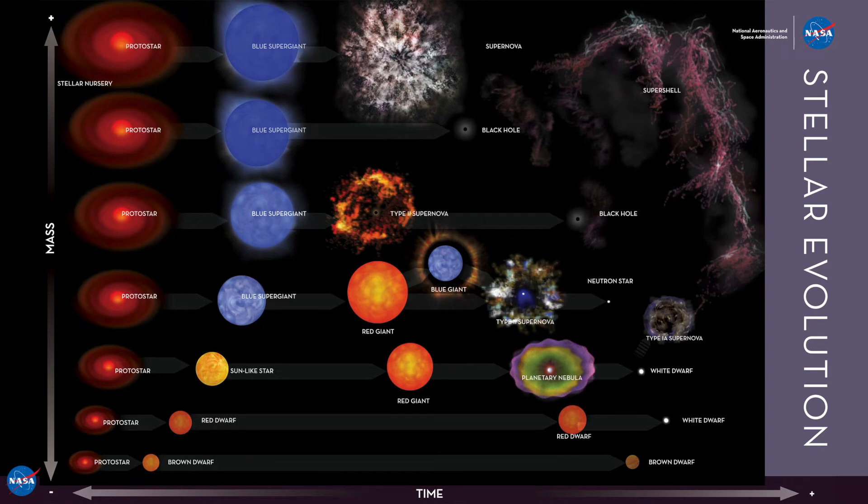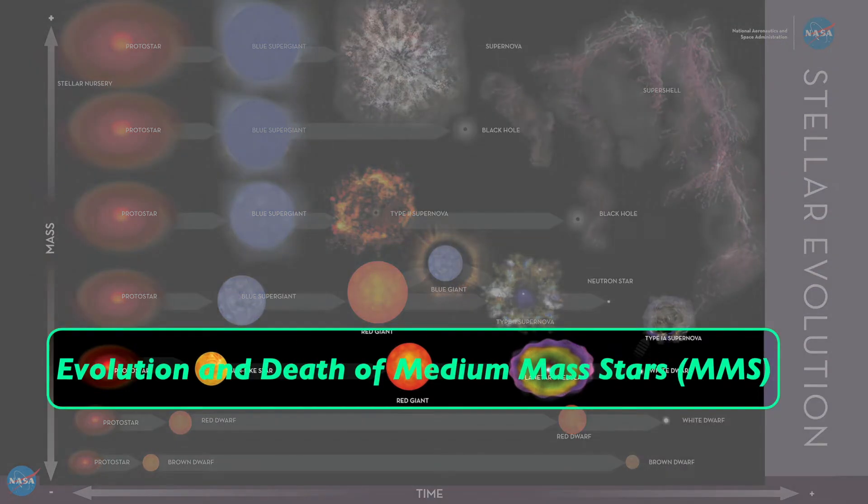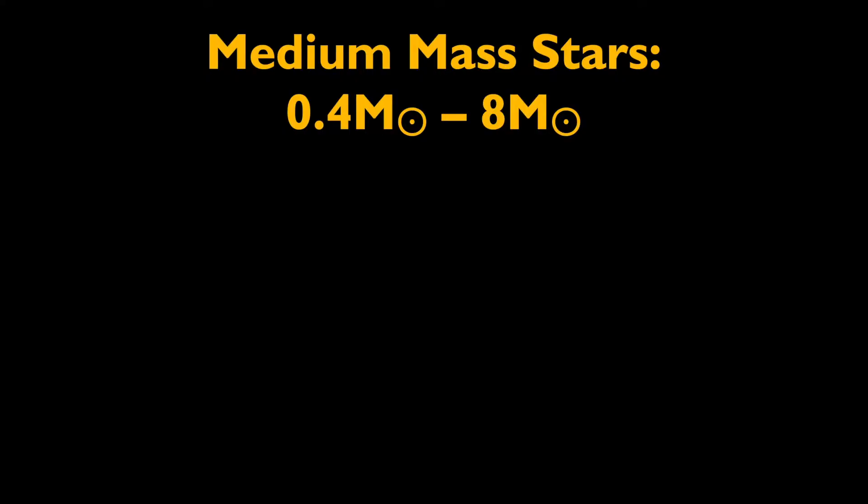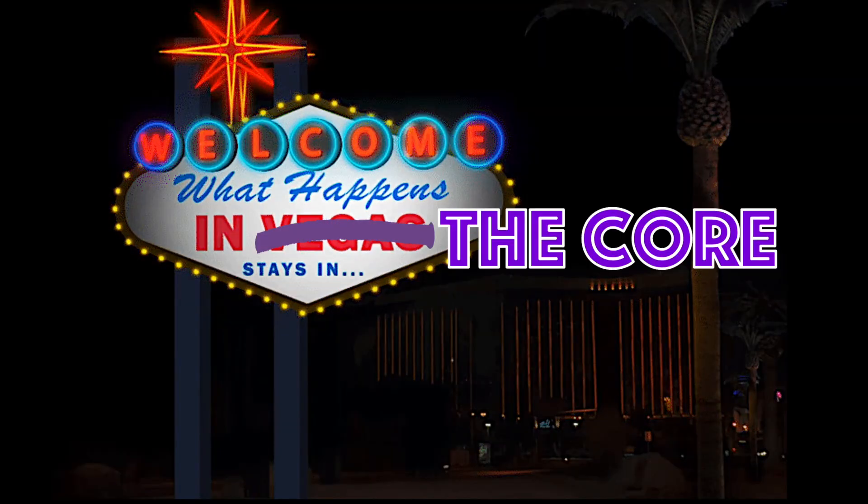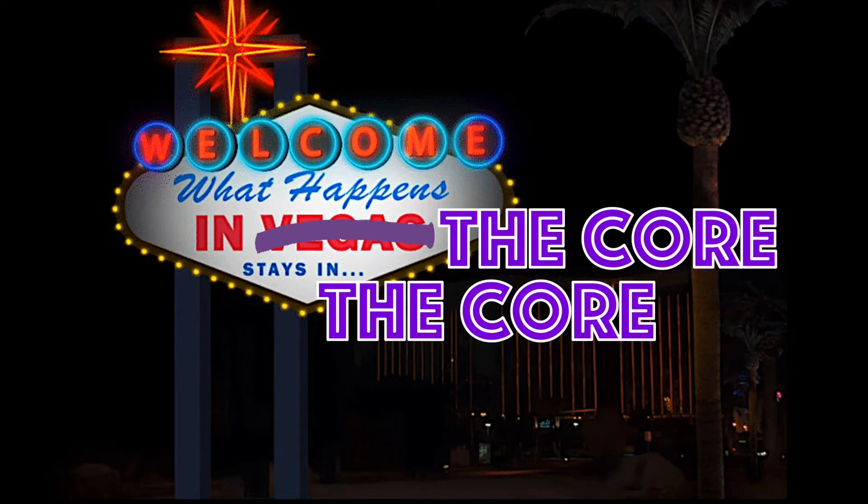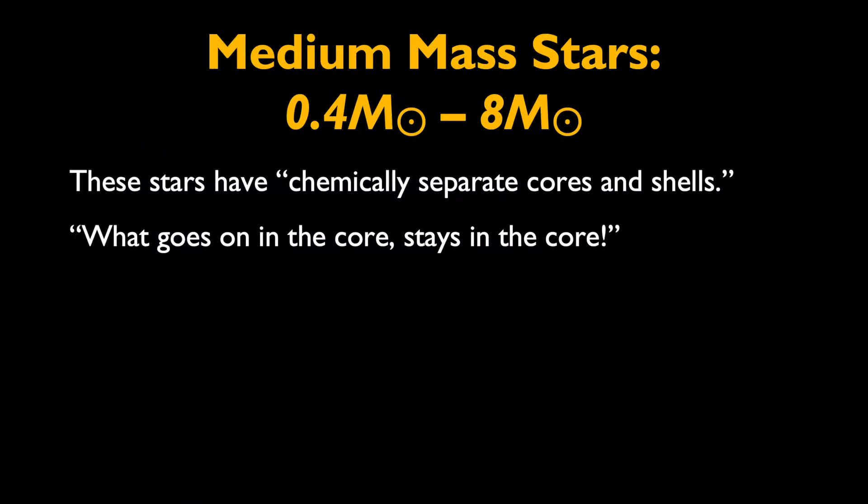Now it's time to talk about the evolution and death of medium-mass stars. In order to understand how these medium-mass stars evolve, we need to first acknowledge the fact that these stars have chemically separate cores and shells. In a way, this kind of means what happens in the core stays in the core. So we can add that to our list of facts.